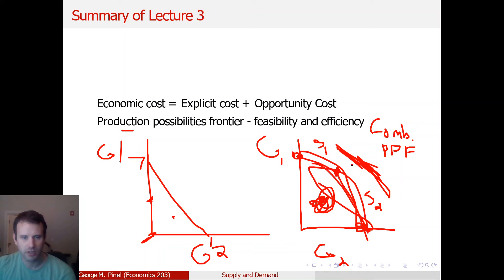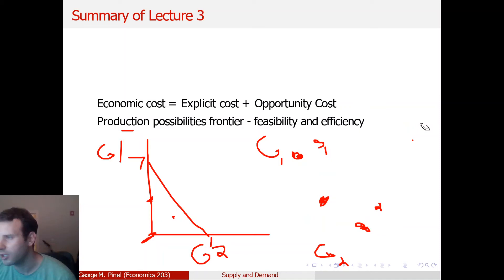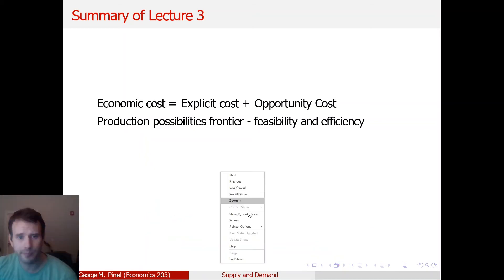Also: below the line is feasible but inefficient; along the PPF is feasible and efficient; above the PPF is infeasible. The next bullet point will be somewhat redundant with what I just said, but let's define everything again — it's helpful to hammer everything home, and it is a recap.